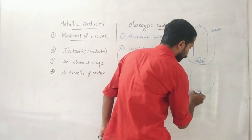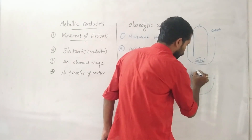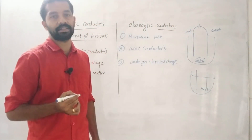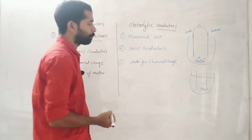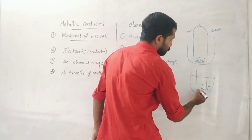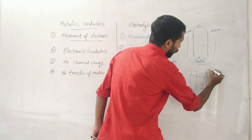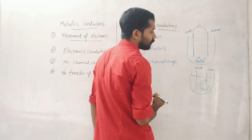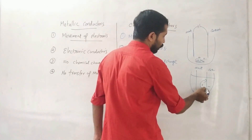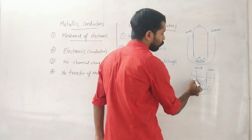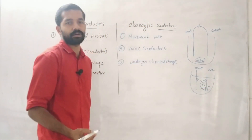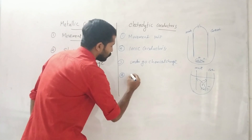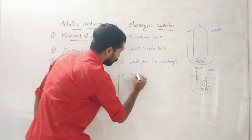For example, in an aqueous solution of sodium chloride, electrolysis produces hydrogen. Na⁺ and Cl⁻ ions are present. At the cathode, reactions occur. This is the electrolytic method, and transfer of matter takes place.